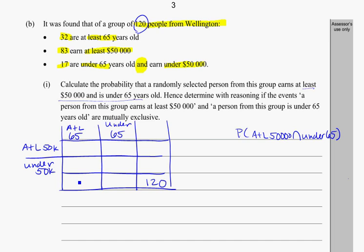I know the column total is 32 — a certain number will earn at least $50,000 and some will be under $50,000. 83 people earn at least $50,000, so this whole row has to add up to 83. I've got a total of 120 people. I've also got one more bit of information: 17 people are both under 65 and earn under $50,000. That gives me enough information to start working backwards to fill in the rest of the table.